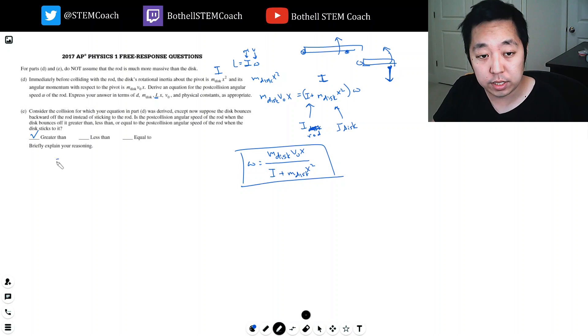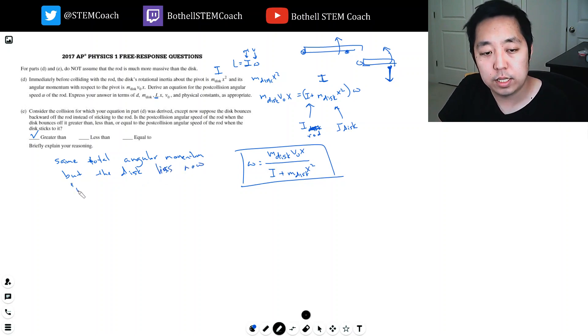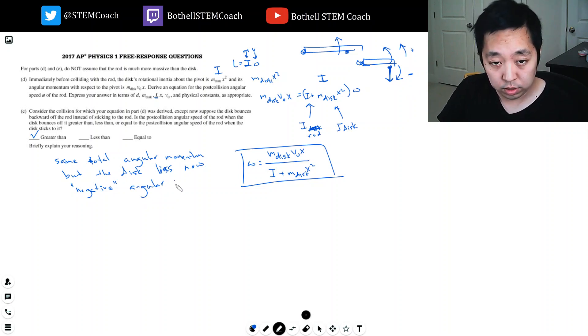So in this case, it has the same net total angular momentum, but the disc has now negative angular momentum because it's moving in the opposite direction. Which way is positive? It has to do with the rotation of the system. If I assume this direction is positive, then any rotation this way is negative and the disc is kind of rotating in the negative direction.